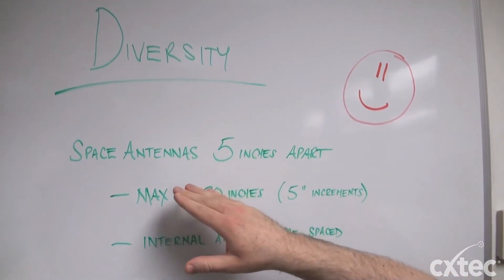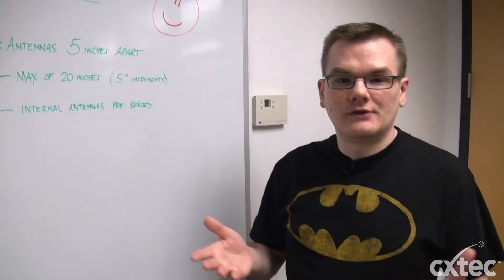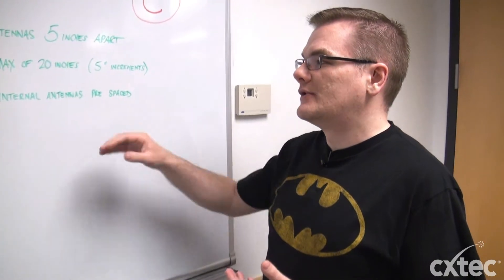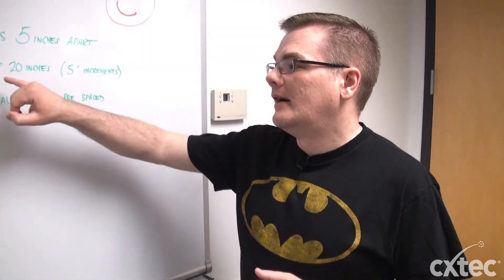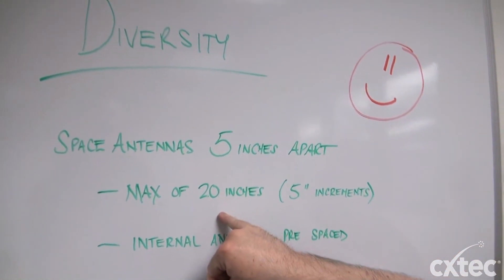So when you are dealing with, say, a Cisco 1242 or 1231, and yes, those are legacy APs, but when you are dealing with a scenario like that, you want to keep those antennas spaced at five inches at a max of 20. So you can do five-inch increments, but the max really is 20 inches apart.